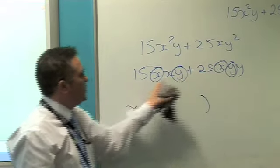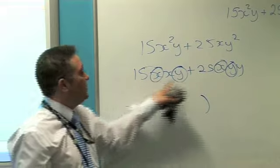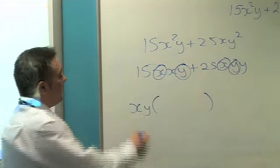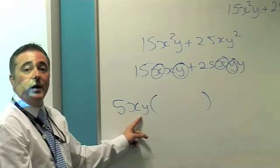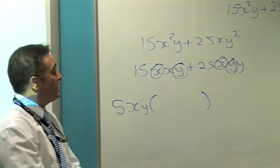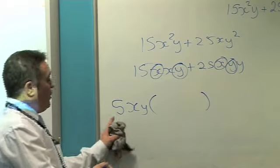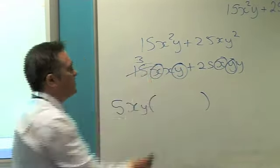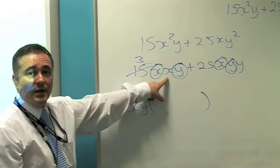What about numbers now? What are my highest common factors of 15 and 25? Well, it's going to be 5. So put 5 outside your bracket. I've got 5xy outside my bracket. Now, ask yourself. What do I have to multiply 5 by to get 15? The answer is 3. Considering now I've got 3 and x on that side.